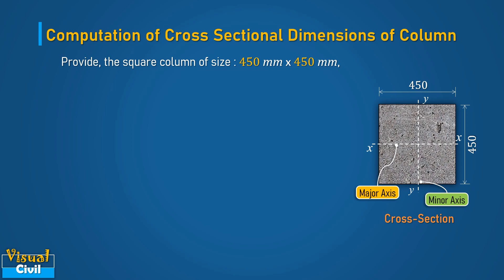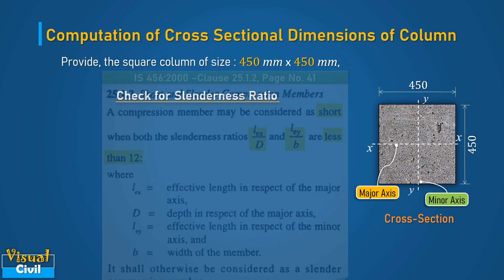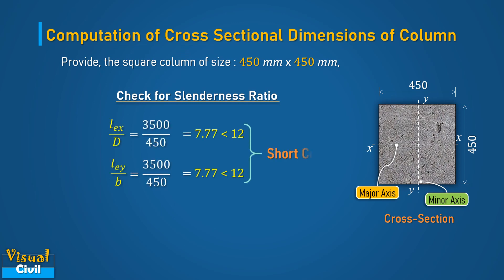Let us check these dimensions for the slenderness ratio. As per clause 25.1.2, the column may be considered as short when both the slenderness ratios LEX/D and LEY/B are less than 12, where LEX and LEY are the effective lengths in respect of major and minor axes respectively, while B and D are the width and depth of the column. Here, LEX and LEY equal to 3500 mm, while B and D equal to 450 mm. After calculation, both the slenderness ratios are less than 12.